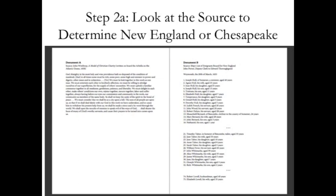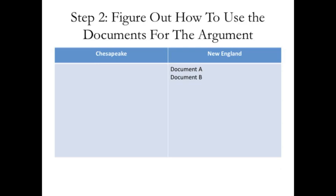If we look at source A we see it's by John Winthrop. If you've done your vocabulary, you'll know that John Winthrop was the governor of the New England colonies, so document A belongs to the New England colonies. I want you to look at document B and try to figure out which one you think this belongs to. If you looked at document B, you should have read that this is a list of immigrants coming to New England, so this is also the New England colonies. We write down document A and B both on the New England side.